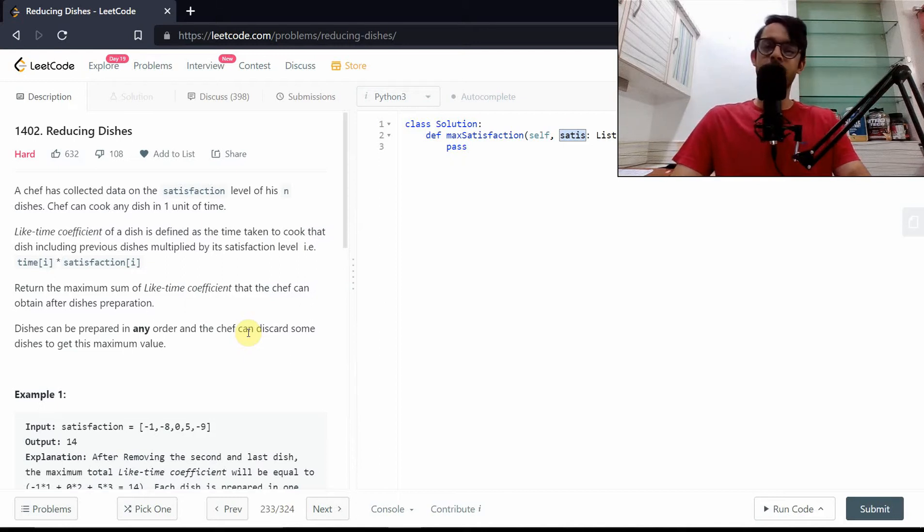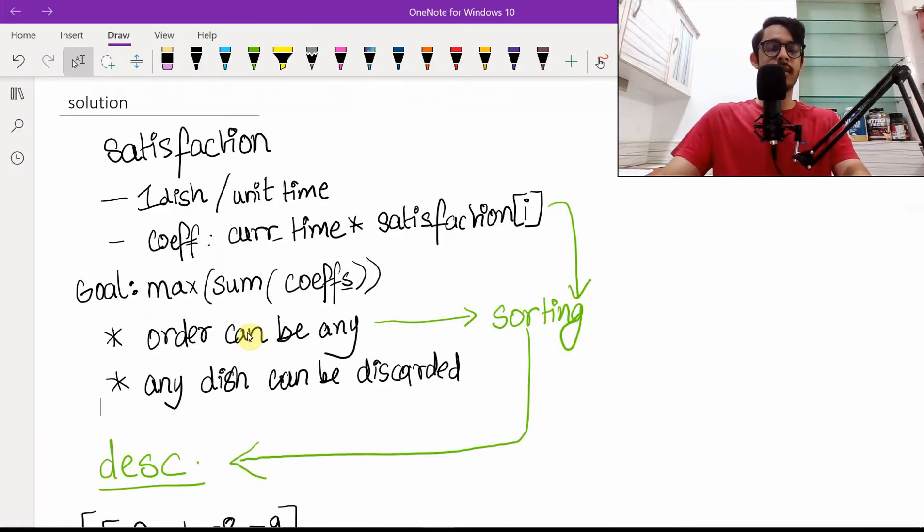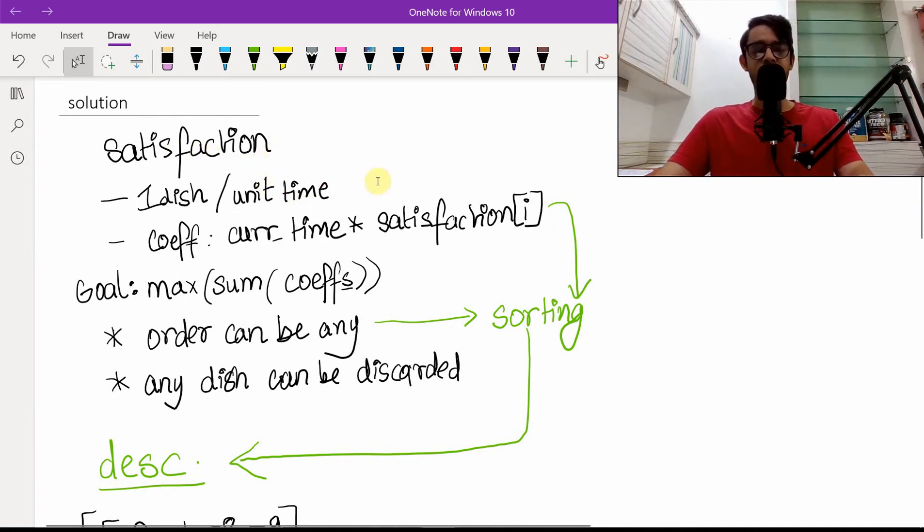We're going to play with both of these later on, but first let's actually write all of them down here. This is just a quick review of what we've already discussed. The coefficient is the current time times the satisfaction of i, the current element times whatever time it is right now. The goal is to get the maximum sum of all the coefficients. Orders can be any, and using this fact...